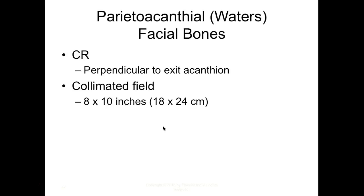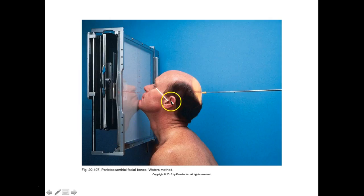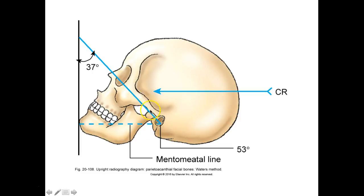The CR is perpendicular, exiting the acanthion. For collimation, the book says 8x10, but in clinic I want to see it down to a 4x4; I'll allow a 5x5 or 6x6, but I will mark you down. You should be at 4x4 for facial bones. You want to verify that the mental-meatal line is perpendicular — we don't measure the 37-degree angle, but we do check the MML.